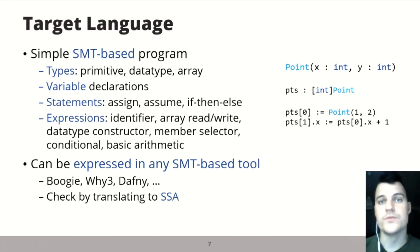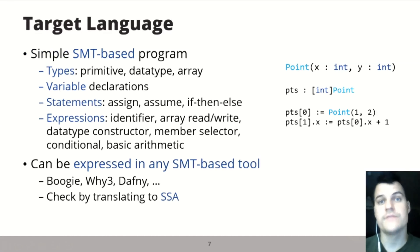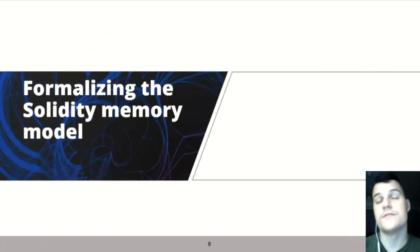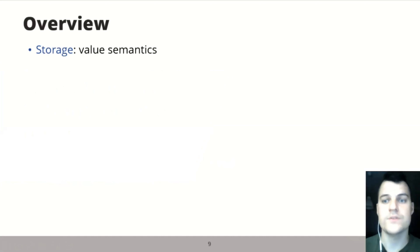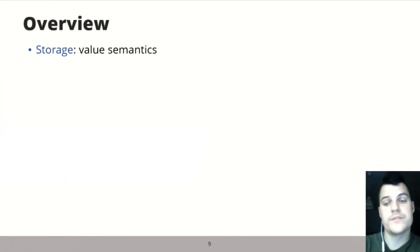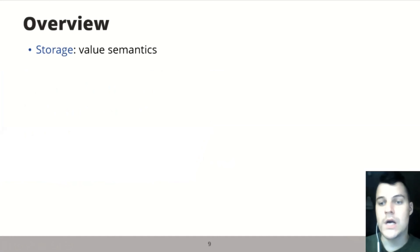These programs can be expressed in any modern SMT-based tool. In our implementation, we use Boogie — but Z3 or DAFNY could also be used, since such programs can be directly checked with SMT solvers by translating them into static single assignment form. Let's start with an overview. One location where data can be stored is permanent storage on the blockchain, where the state variables are stored. It has pure value semantics, meaning no overlapping and no aliasing.